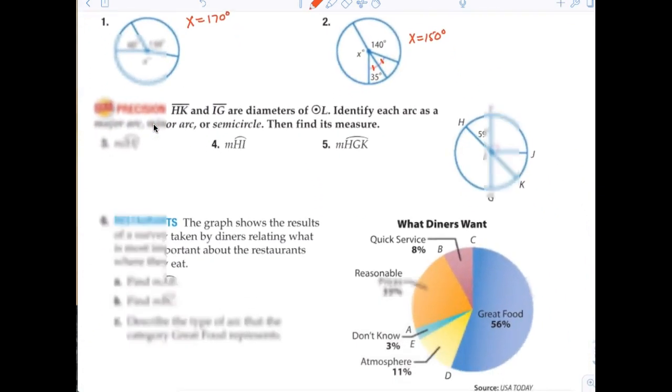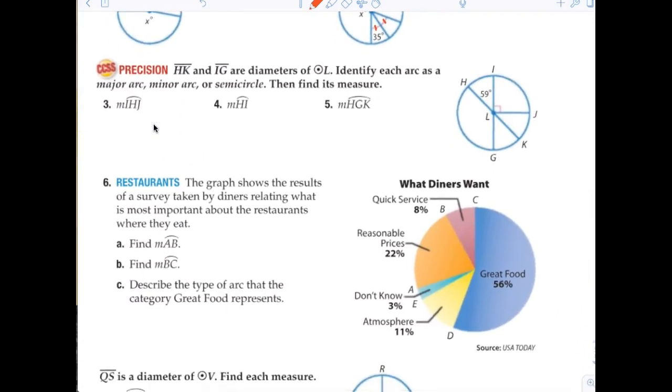Let's take a look now at question number three. HK and IG are diameters of circle L, identify each arc as major, minor, or semi-circle. So let's talk about a minor arc first. What do you think a minor arc would mean? Less than 180. That is exactly correct. A semi-circle would probably mean that it is 180, and then major arc would just be greater than 180. Pretty straightforward.